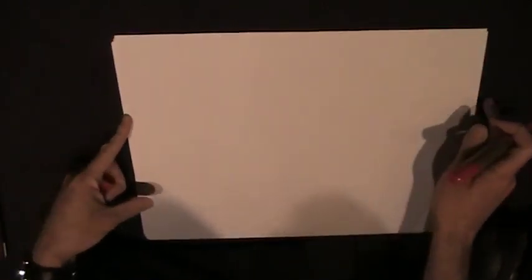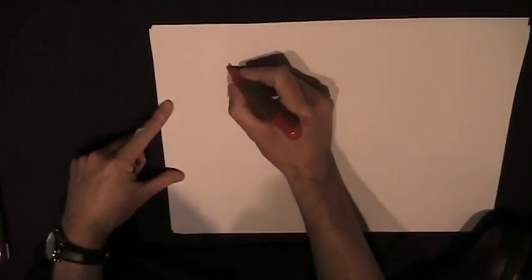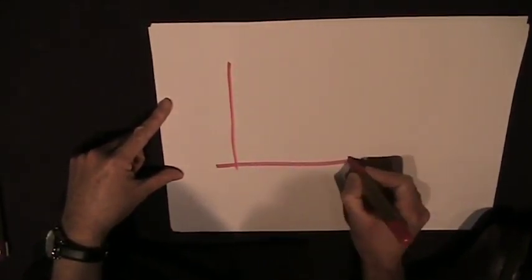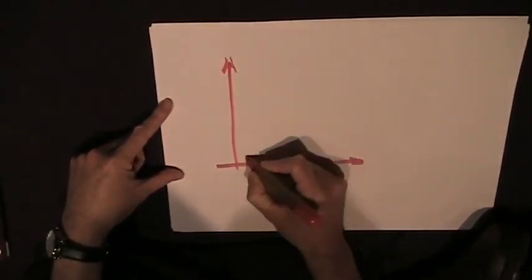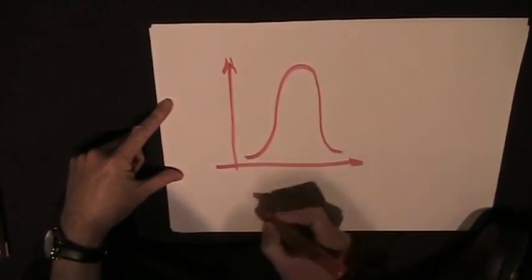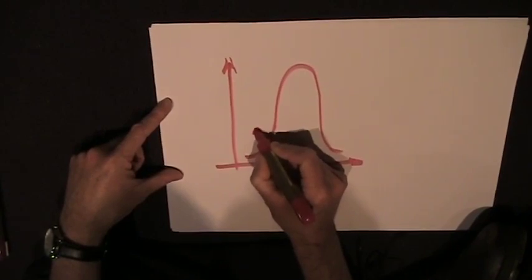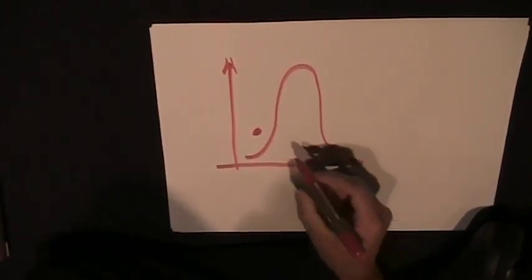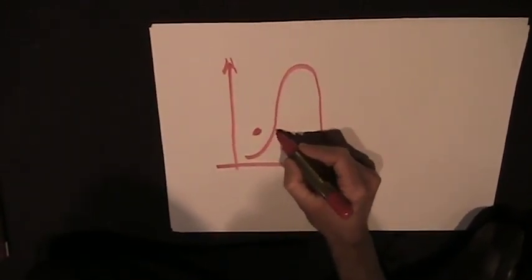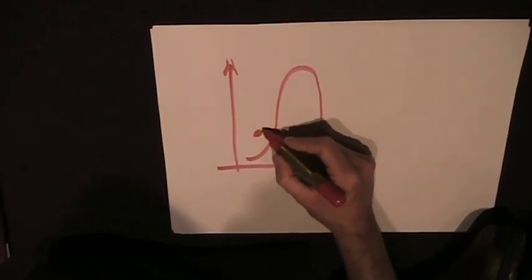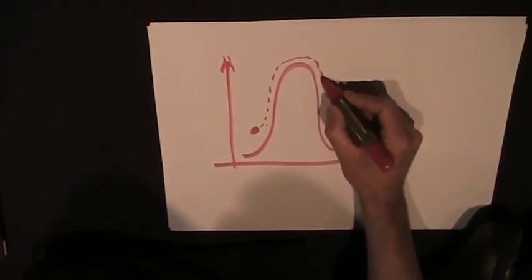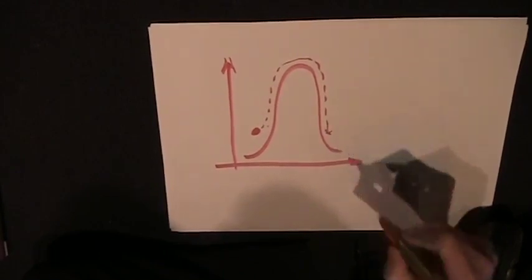So one of the effects in quantum mechanics is that, say you have some kind of energy barrier, like this, and a particle is sitting on one side of that barrier. Now we can increase the particle's energy to actually get up and over the barrier in this direction here.